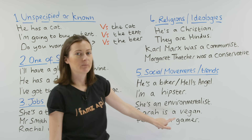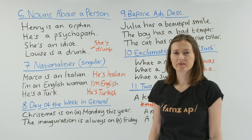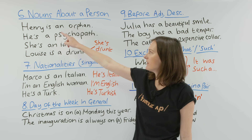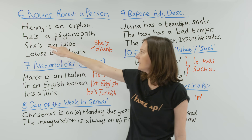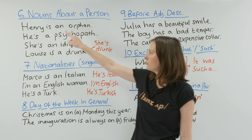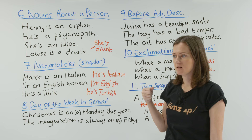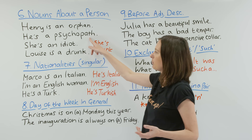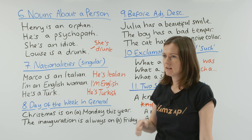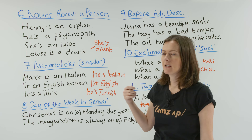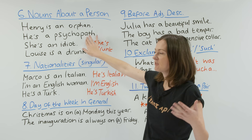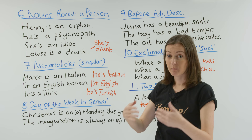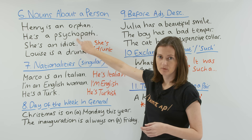The next use is nouns about a person. 'Henry is an orphan' — 'orphan' is the noun, so we have 'an' before it. 'He's a psychopath' — 'psychopath' is the noun, so we have 'a' before it. A psychopath can be the kind of person who goes around causing harm, or someone who has no morals and will do anything to get what they want. When we change this to the adjective form 'psychopathic', we say 'he's psychopathic' and we don't need 'a'. But if we're using the noun, we need 'a' or 'an'.